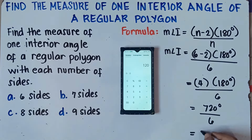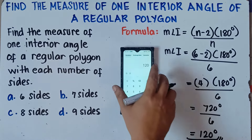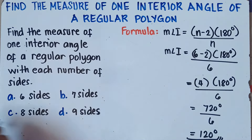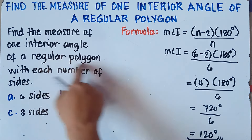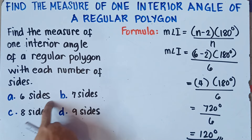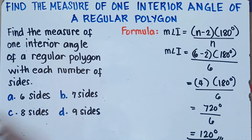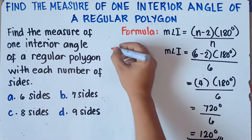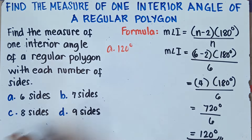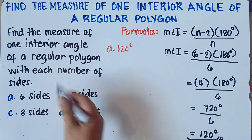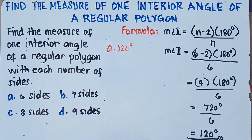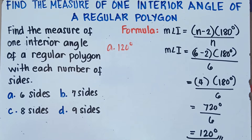Therefore, each interior angle of a regular hexagon — a polygon with 6 sides — is 120 degrees. This is a regular hexagon because each of its interior angles are congruent. So for letter A, each interior angle of a regular hexagon is 120 degrees.